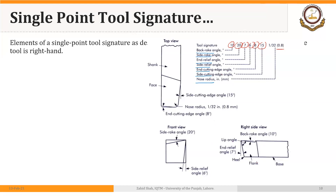You can see all these angles here as a recall. The back rake angle of 10°, side rake angle of 20°, end relief angle of 7° related to the end flank, side relief angle of 6° related to the side flank, end cutting edge angle of 8°, side cutting edge angle of 15°, and nose radius of 0.8 mm. So the sequence is: two rake angles, then two relief angles, then two cutting edge angles, and finally the nose radius.